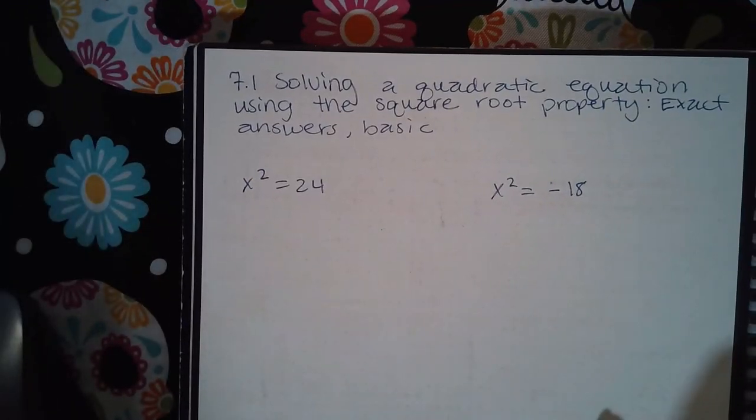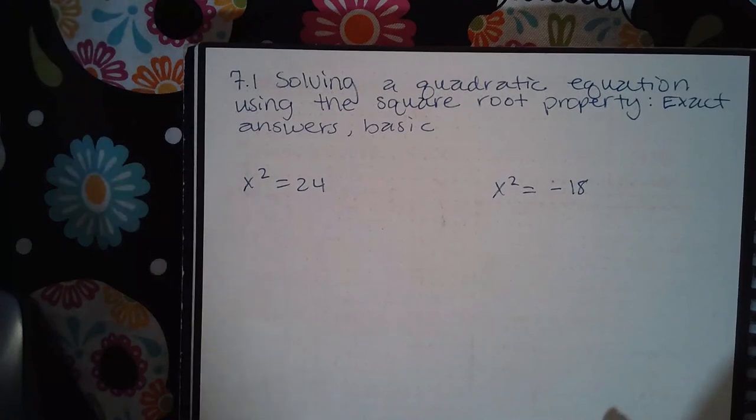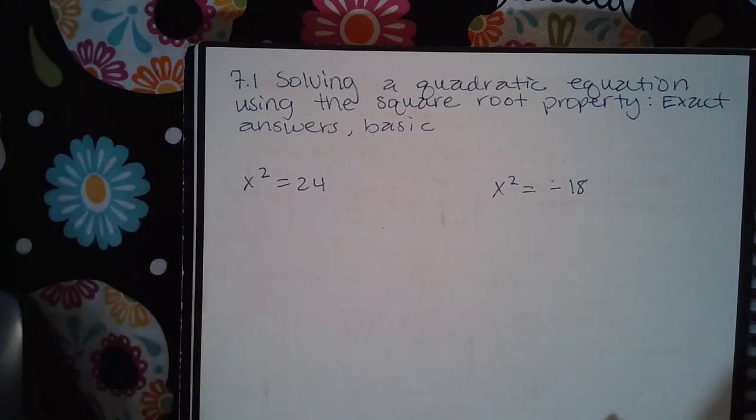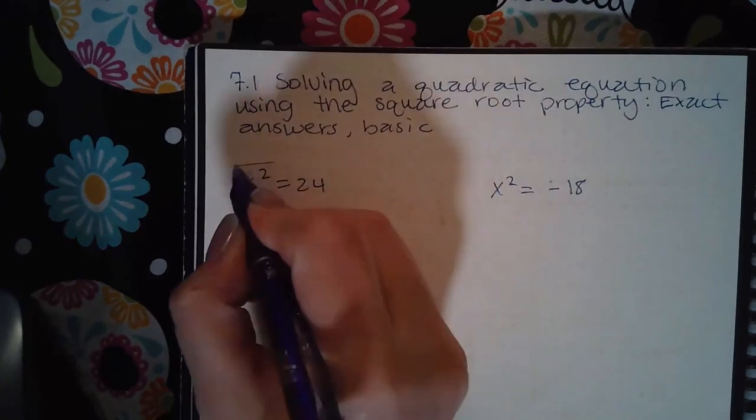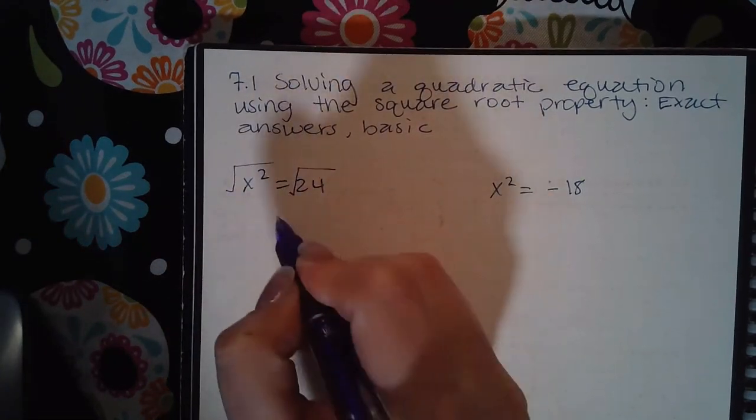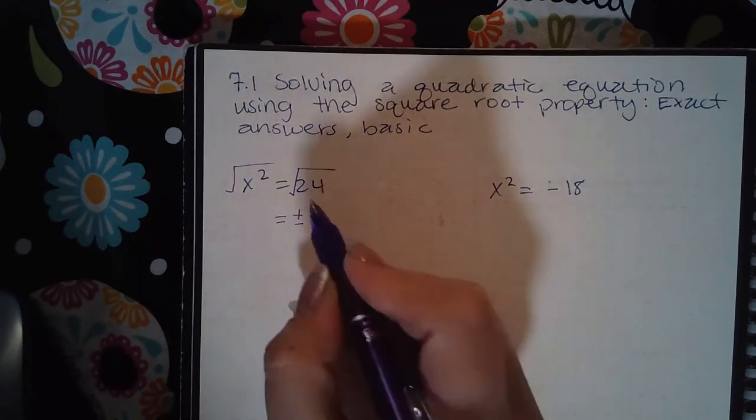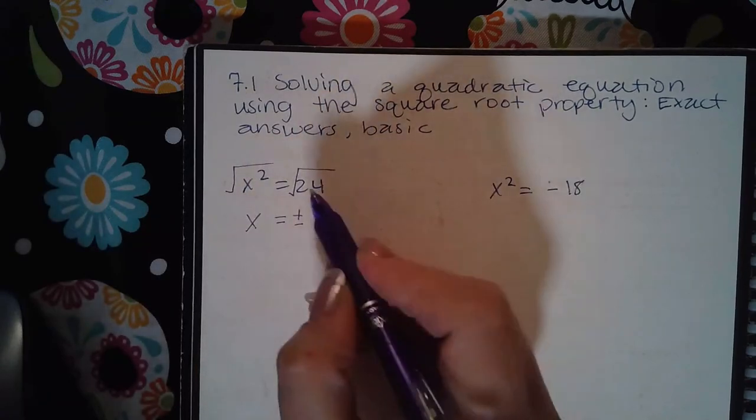Here we have 7.1 solving a quadratic equation using the square root property, exact answers, basic. The square root property tells us if we take the square root on both sides, we get plus or minus on this side without the variables.